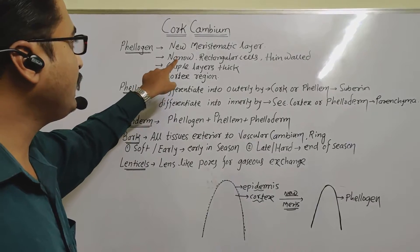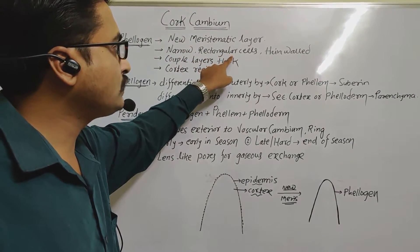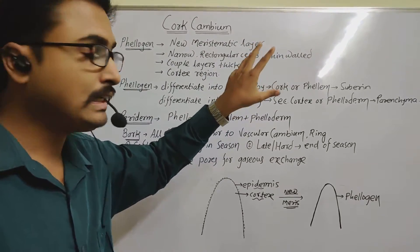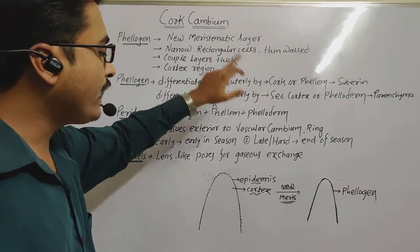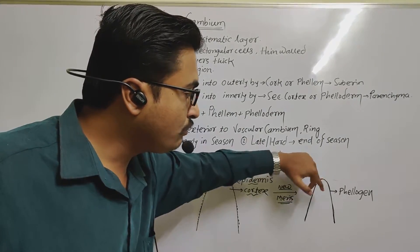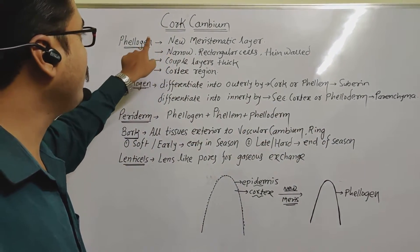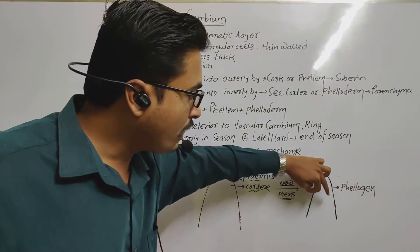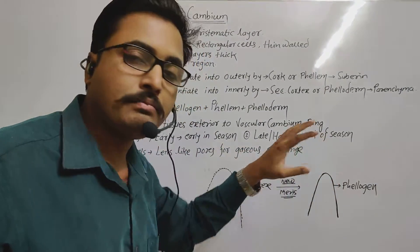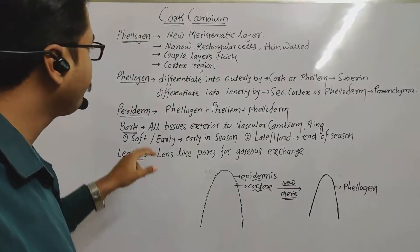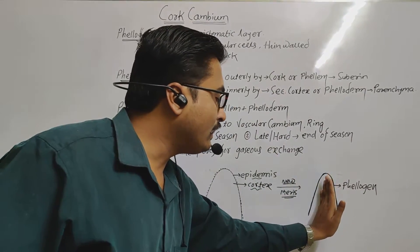Phelogen has presence of narrow cells, rectangular cells, and thin-walled cells. The main thing is that cork cambium is differentiated into two layers, forming two different tissues in two different regions. The main thing is that this occurs in the cortical region.